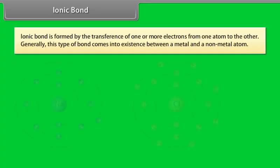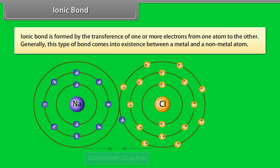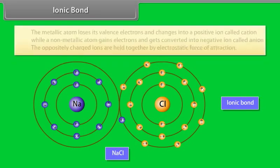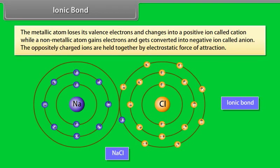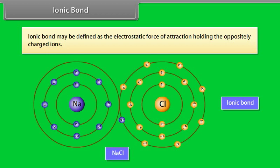Ionic bond is formed by the transference of one or more electrons from one atom to another. Generally, this type of bond exists between a metal and a non-metal atom. The metallic atom loses its valency electrons and changes into a positive ion called a cation, while a non-metallic atom gains electrons and gets converted into a negative ion called an anion. The oppositely charged ions are held together by electrostatic force of attraction.